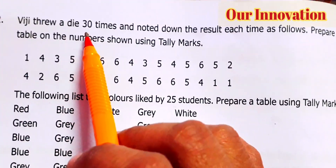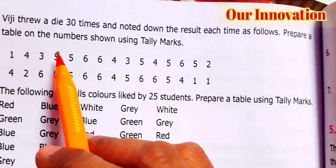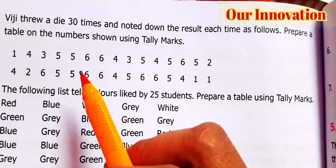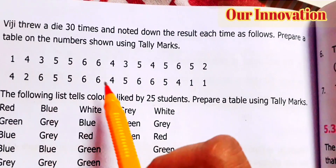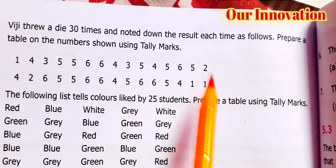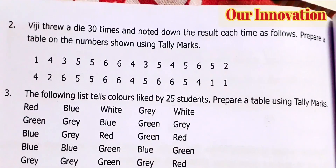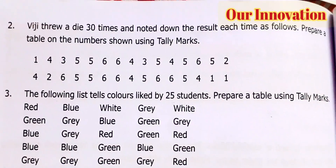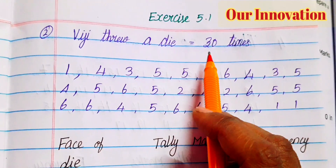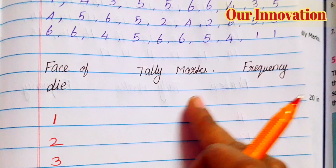Exercise 5.1, second sum. A die was thrown 30 times and the results were noted each time. We need to prepare a table showing the numbers shown using tally marks. So we note down the result of the die thrown 30 times and organize it into a tally marks table with frequency.